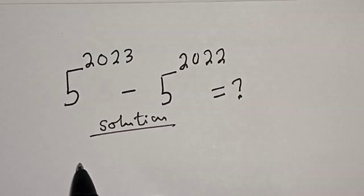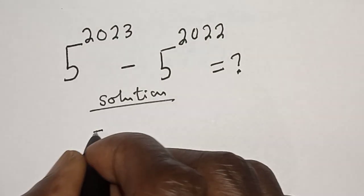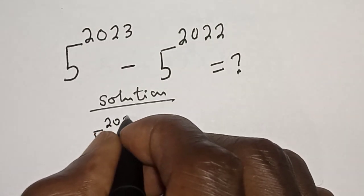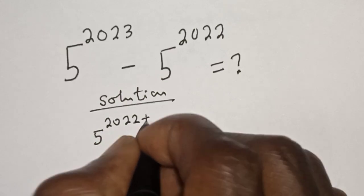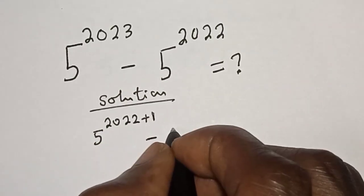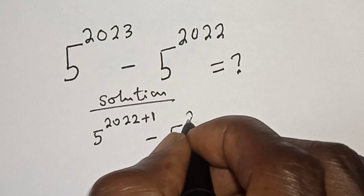5 raised to power 2023 can be written as 5 raised to power 2022 plus 1, minus 5 raised to power 2022.